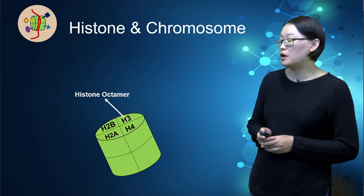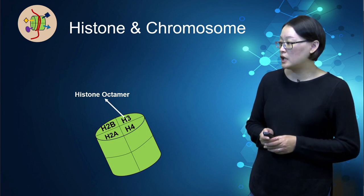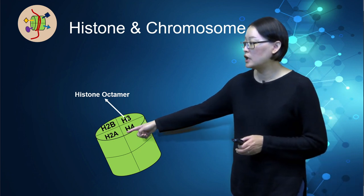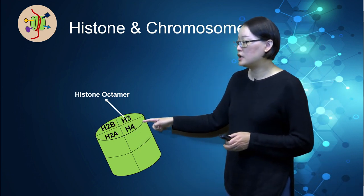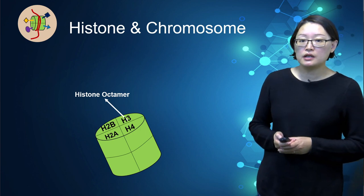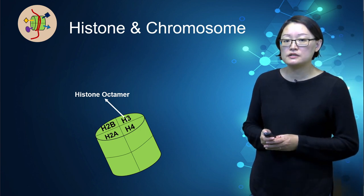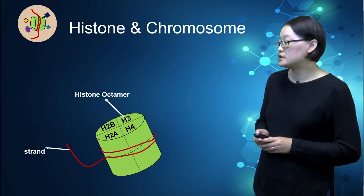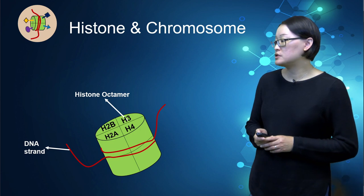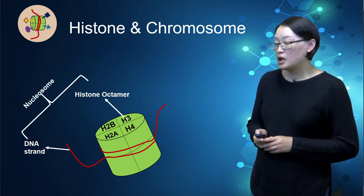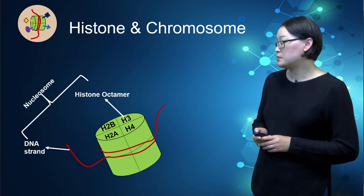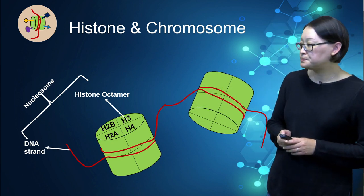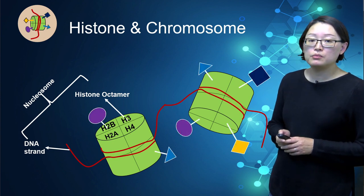Histone is a protein complex consisting of eight proteins — two copies each of the four core proteins known as H2A, H2B, H3, and H4. It acts like a spool around which DNA winds to create structural units known as the nucleosome. The nucleosome is the basic, primary building block for chromatin, which condenses further to form a chromosome.